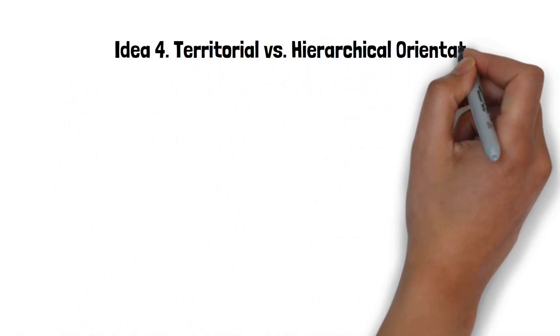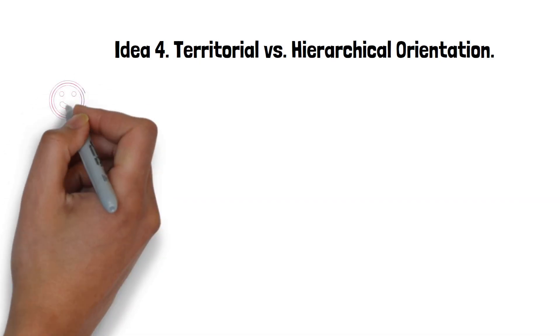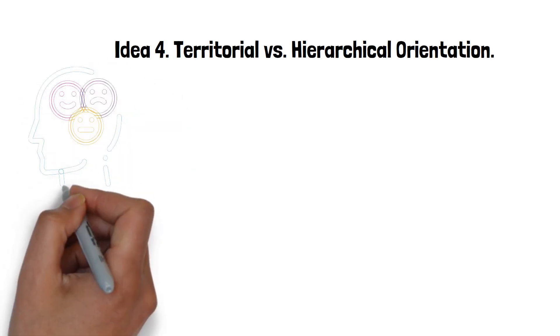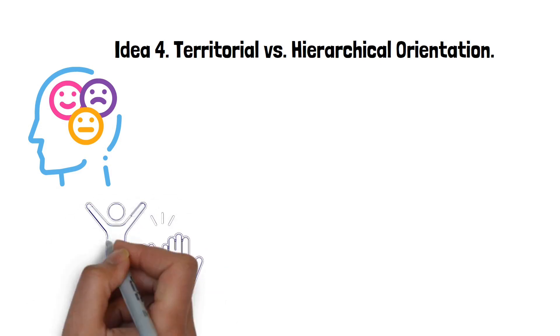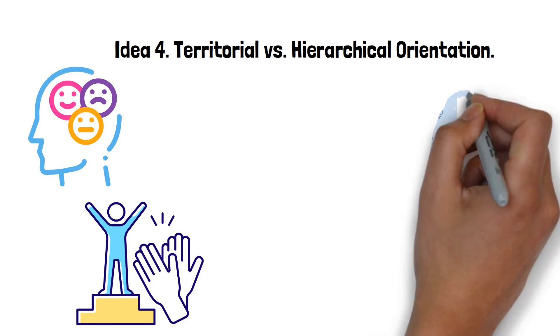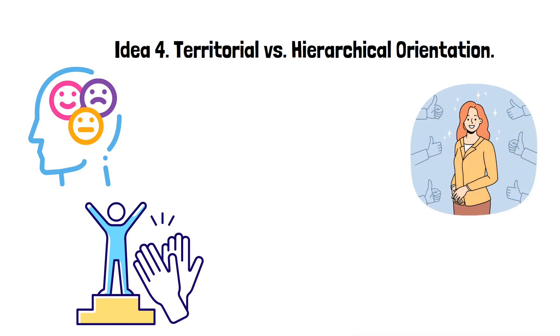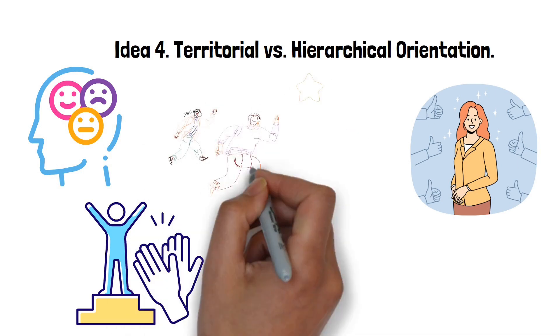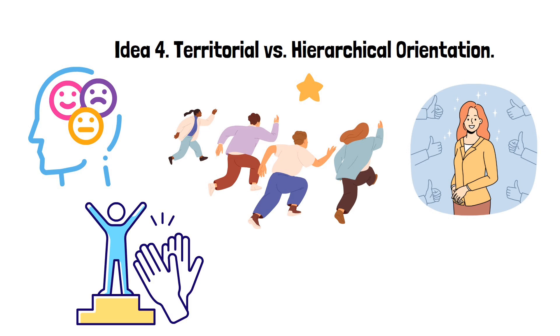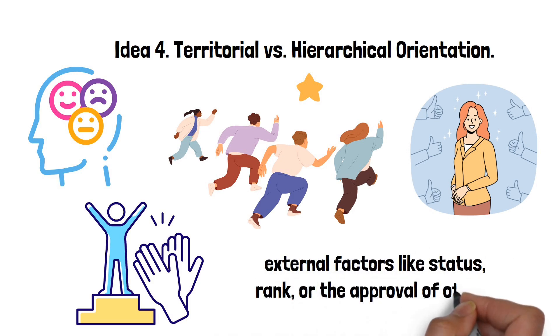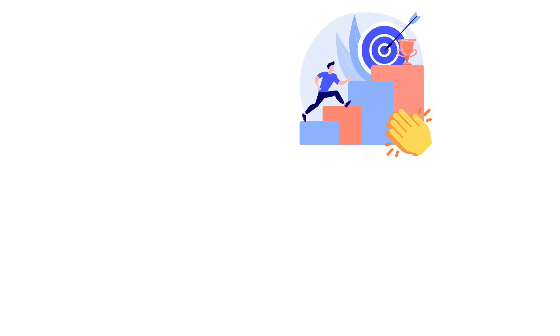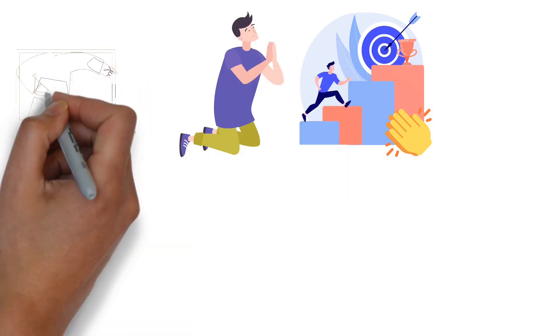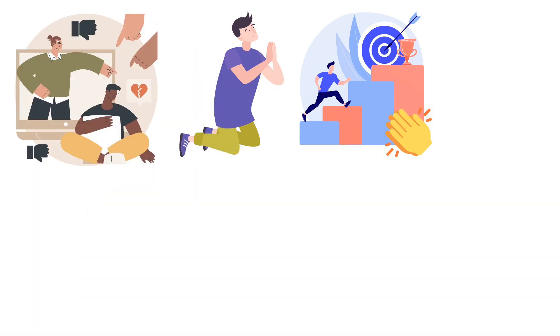Idea 4: Territorial vs. Hierarchical Orientation. Territorial vs. Hierarchical Orientation is an interesting concept, especially when looking at how people approach their work and creativity. In a nutshell, it's about whether you're driven by external recognition or by the satisfaction of the work itself. A hierarchical orientation is when someone's motivation comes from where they stand in relation to others. It's like being in a race, always checking to see who's ahead and who's behind. In this mindset, success is measured by external factors like status, rank, or the approval of others. It's about climbing ladders and being acknowledged by peers or society. The downside of this approach is that it can make you dependent on external validation. Your happiness and sense of worth might fluctuate based on how others see you or on things you can't control.